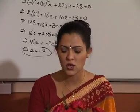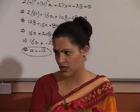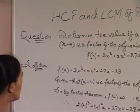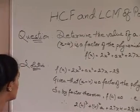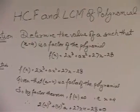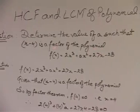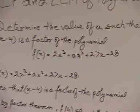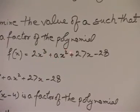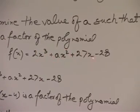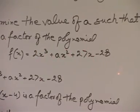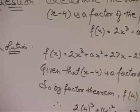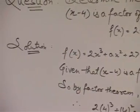I'll solve a typical question using the third method — use of the remainder theorem. The question is: determine the value of 'a' such that (x - 4) is a factor of the polynomial f(x) = 2x³ + ax² + 27x - 28.